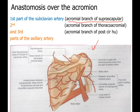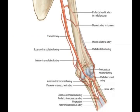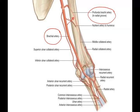The brachial artery gives the profunda brachii artery, also called the deep artery of the arm, which passes with the radial nerve in the radial groove. The brachial artery then continues down and divides into its two terminal branches: the radial artery and the ulnar artery.